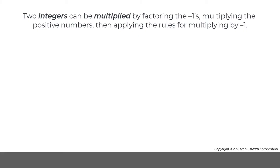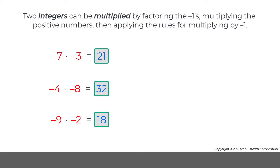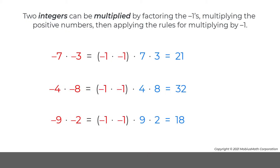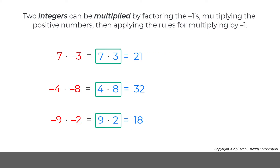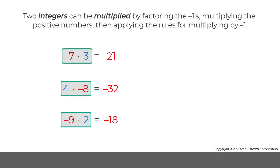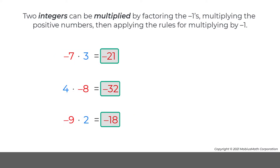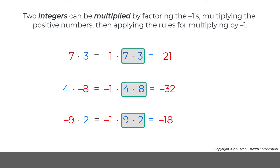So, when two negative numbers are multiplied, the product is positive. This is because negative 1 times negative 1 can be factored out as 1, leaving a positive times a positive. When a negative and a positive number are multiplied, the product is negative. This is because a single negative 1 can be factored, leaving the opposite of a positive times a positive, which is negative.